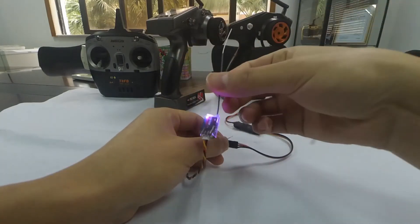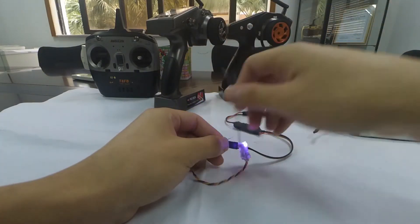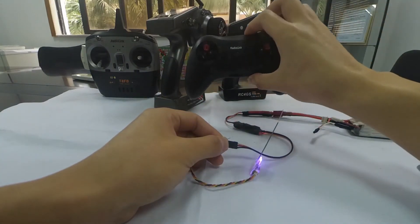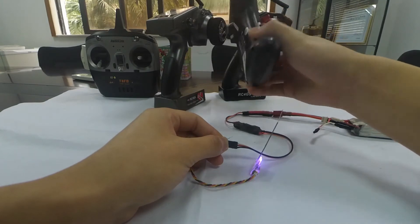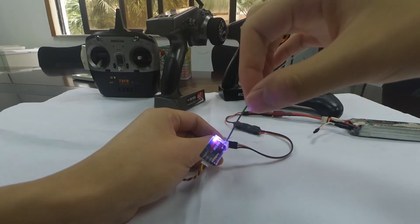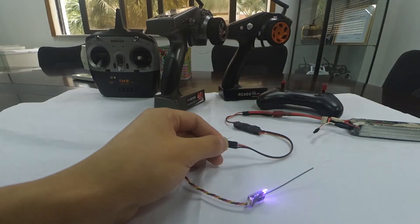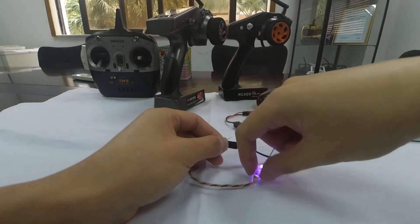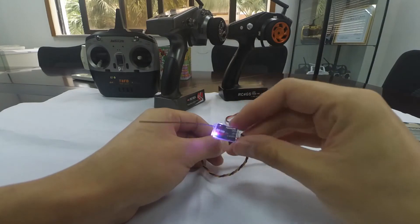If the transmitter is without LCD screen like TAFB or TAS, the binding process is the same. Only when the LED is always on means binding is complete. If the LED keeps flashing slowly, it means binding doesn't succeed.